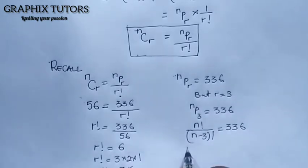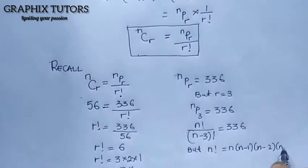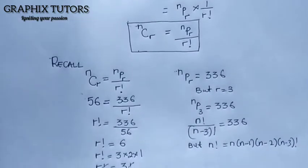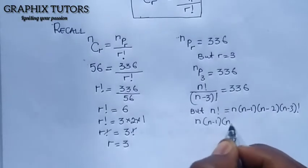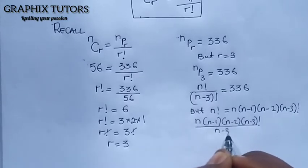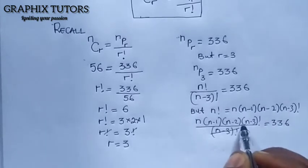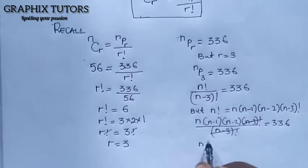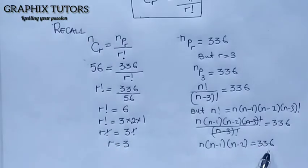Now, n factorial can be expanded as n times (n minus 1) times (n minus 2) times (n minus 3) factorial. Placing this in the equation: n times (n minus 1) times (n minus 2) times (n minus 3) factorial, all over (n minus 3) factorial, equals 336. The (n minus 3) factorials cancel, leaving n times (n minus 1) times (n minus 2) equals 336.